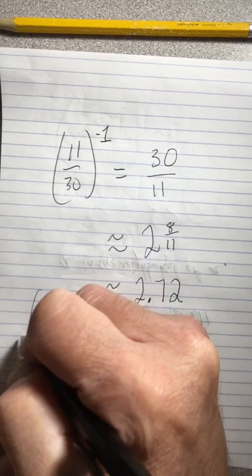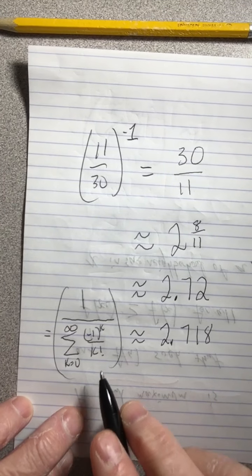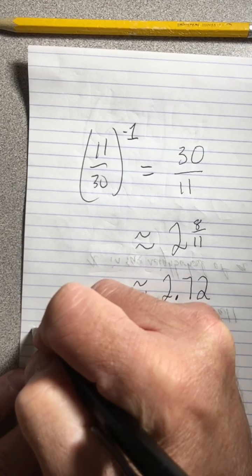And we have a special name for it. We give it a very special name because it's a very special number, and that name is E.